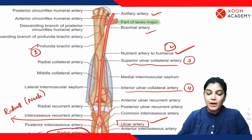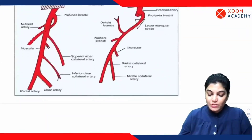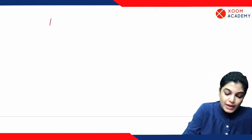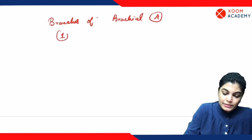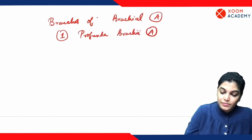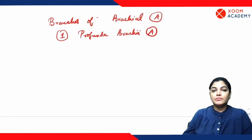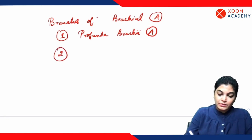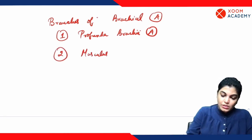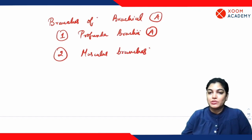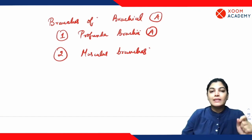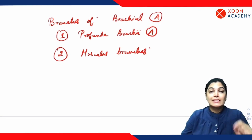Now let me elaborate on the branches of the profunda brachial artery. Writing down the branches of brachial artery: the most important branch is the profunda brachial artery. To be more specific, it is the profunda brachial artery that is correctly designated as the deep artery of arm — not the brachial artery as a whole.